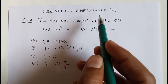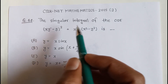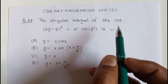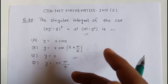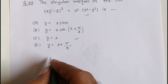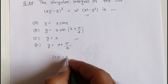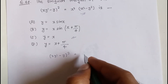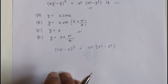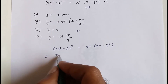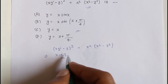CSIR NET Mathematics 2015 June, question number 48: find the singular integral of the given ordinary differential equation. The given ODE is x times (y')² equal to x² minus y², which can be written as x(dy/dx - y)² equals x² minus y².